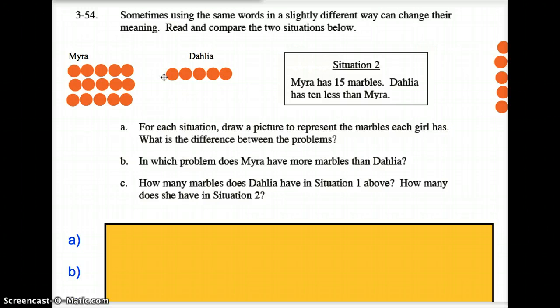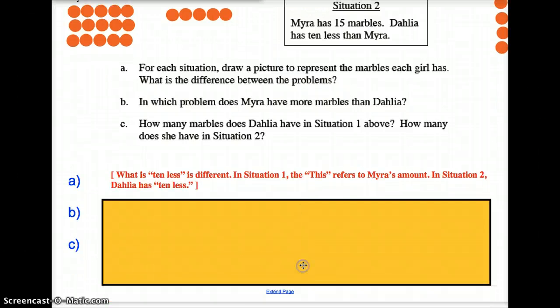Okay, now for each situation, draw a picture to represent how many marbles they have. Well, we kind of did that. In which problem does Myra have more marbles than Delilah? Well, Myra had more marbles in the second one. Let's move on to the next one.